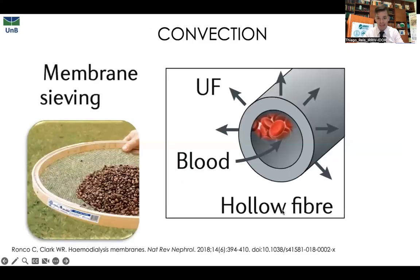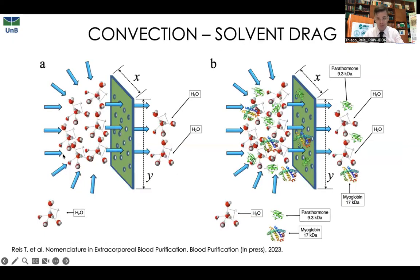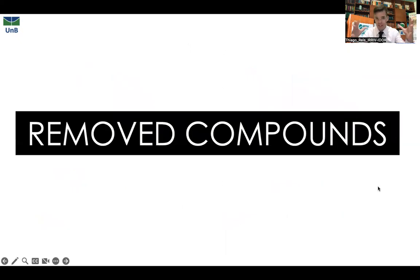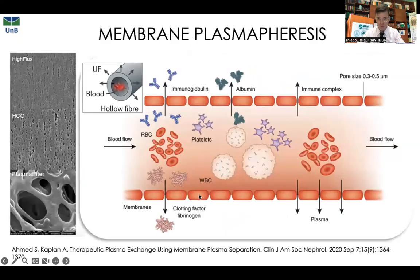The principle is convection. When you apply a pressure inside the blood compartment of the hollow fiber, by the mechanisms of convection or solvent drag, you remove the solute. So imagine you have molecules of water and proteins and other solids in the blood. When you apply pressure, you remove those substances depending on their molecular weight and radius. The removal compounds in plasmapheresis are things up to the size of platelets.